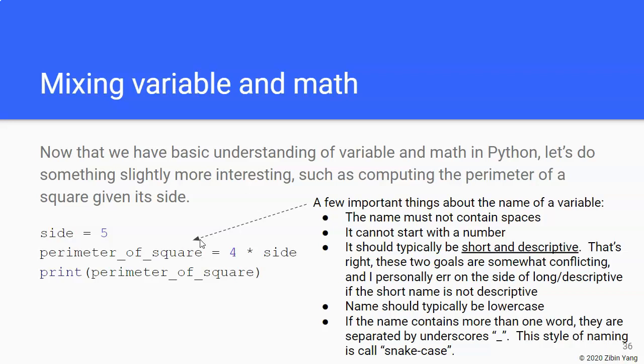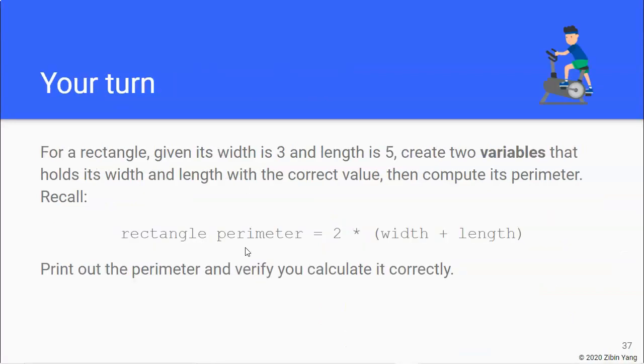All right, so I think it's time for you to get your hands dirty and work on a slightly more complicated example on your own. And that is, let's calculate the perimeter of a rectangle given its width that is stored in a variable and its length that is stored in another variable.